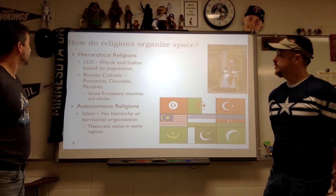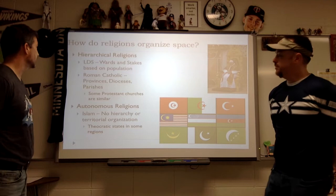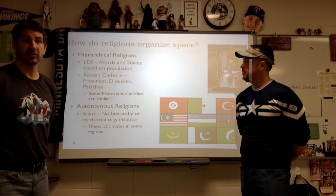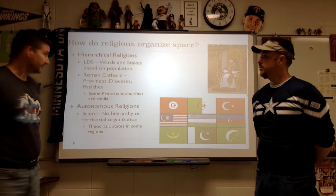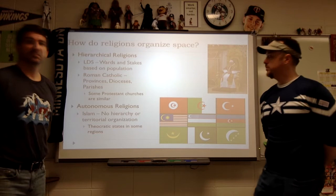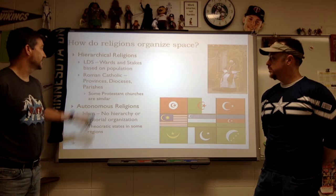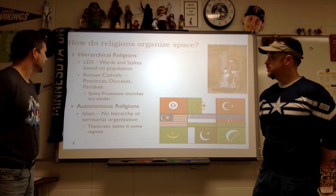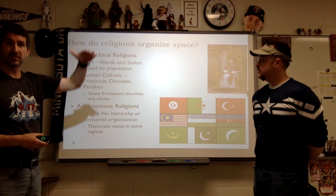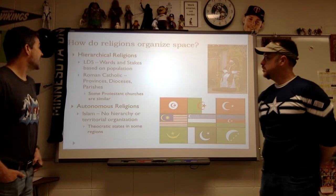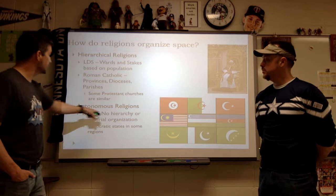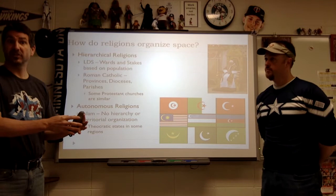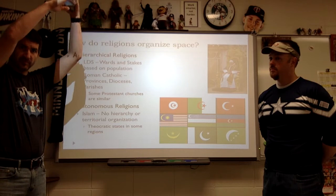Looking at organized spaces, we've got to talk about hierarchical religions versus autonomous religions. The best examples of hierarchical religion are the Roman Catholic Church and the Latter-day Saints. The Catholic Church is broken into provinces, dioceses, and parishes, run by bishops and archbishops. It starts in Rome and works its way down to the local church. Protestant churches sometimes have that, but often do not.